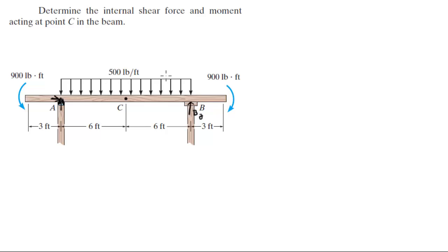So the first thing I would like to do is replace this loading with an equivalent force. It's a rectangular distributed load, therefore it has an equivalent force right in the middle of FY and it's equal to the area of this rectangle, which has a length of 12 feet times the height, which is 500 pounds per foot, and it is equal to 6,000 pounds.